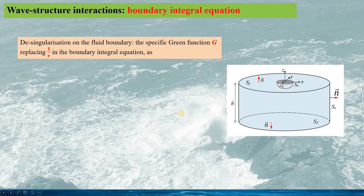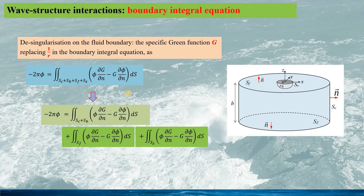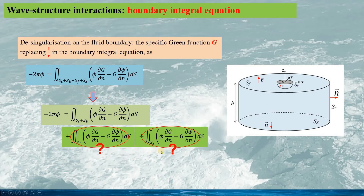Using the specific Green function g to replace the simple source 1/r in the boundary integral equation, the desingularization on the fluid boundary is given in this expression. The fluid boundary includes Sc, Sb, Sf, and Sz. Separating the surface integral, the right-hand side has the surface integral on Sc plus Sb, plus the surface integral on Sf, plus the surface integral on Sz. In the next two slides, we will see what we get for these two surface integrals on Sf and Sz by using the specific Green function g.